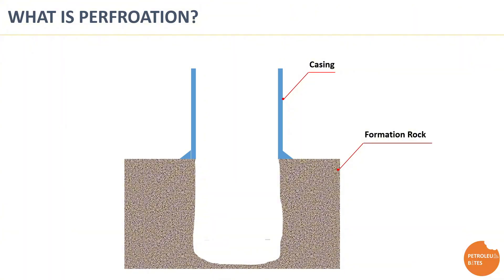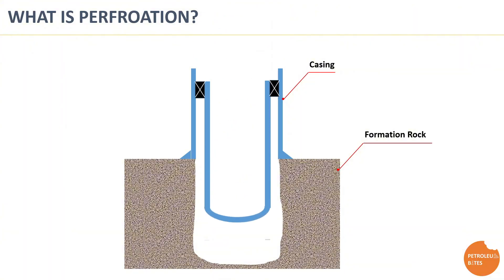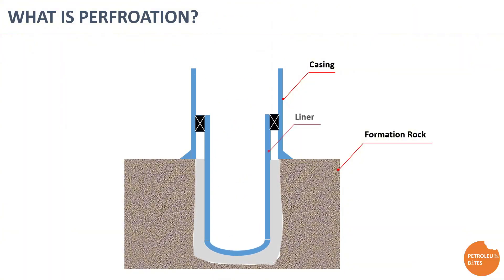After drilling operation to targeted formation depth is reached, usually the well is completed by installing a production liner and performing a cement job. At this point, the targeted formation is sealed by the cemented liner and there is no way to get access to the reservoir rock.